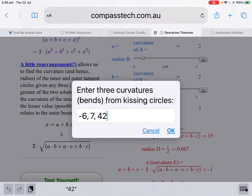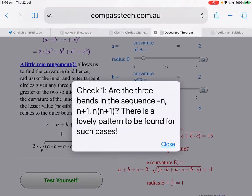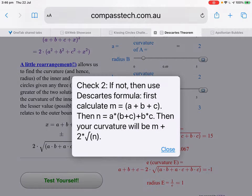So enter three curvatures from kissing circles. It puts three in, but you can put your own. Now if you were paying attention a minute ago, that might suggest something, but let's go on and see. The question is, what's the next? What do you predict as the next circle bend? Now I could put my answer in, but let's see what the hints show us. We'll put a zero. Check one. Are the three bends in the sequence minus n, n plus 1, n times n plus 1? There is a lovely pattern to be found for such cases. If not, then use Descartes' formula.